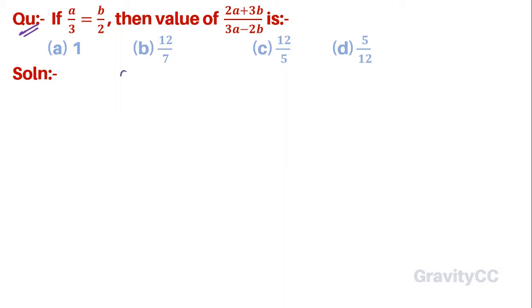So here, given that a/3 = b/2, let this equal k. Therefore, a = 3k.